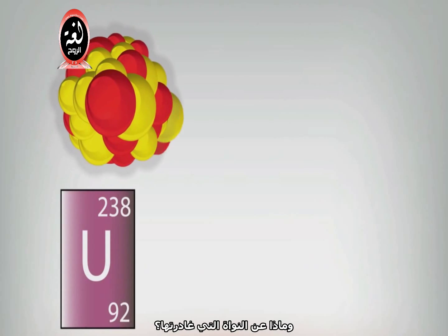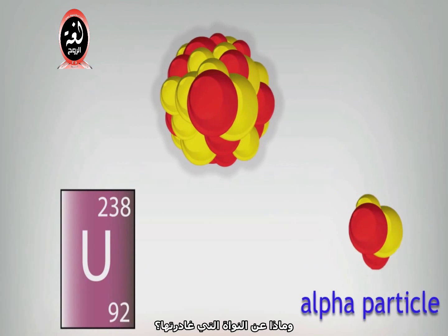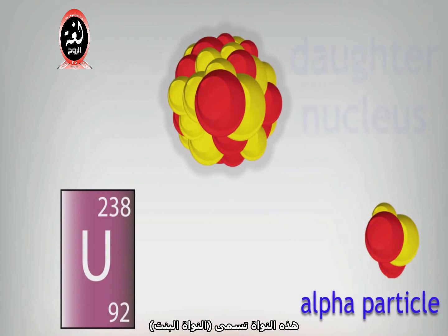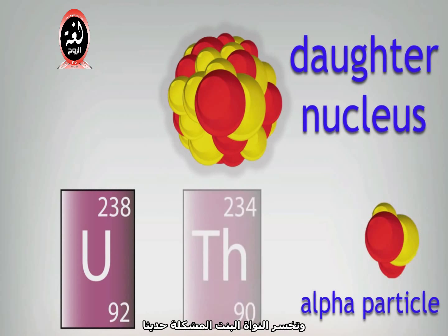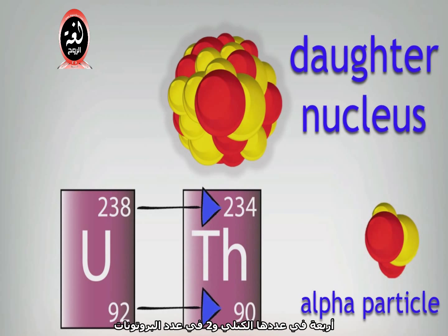What about the nucleus it leaves behind? This nucleus is called the daughter nucleus. It has lost two protons and two neutrons — the newly formed daughter nucleus loses four in its mass number and two in its proton number.